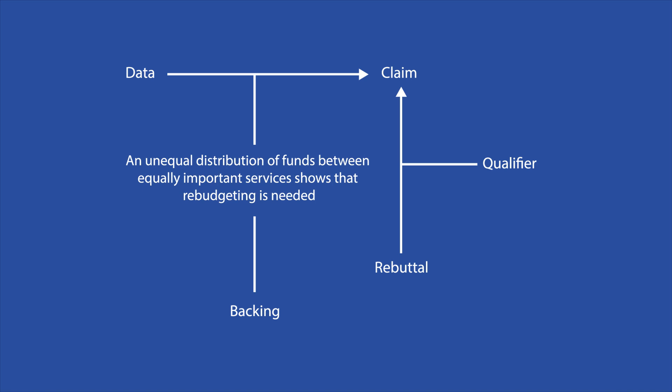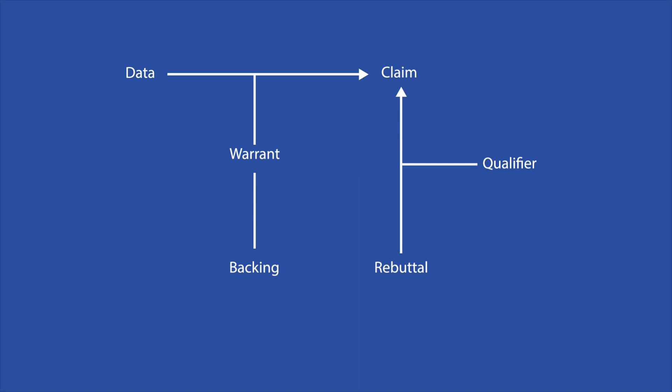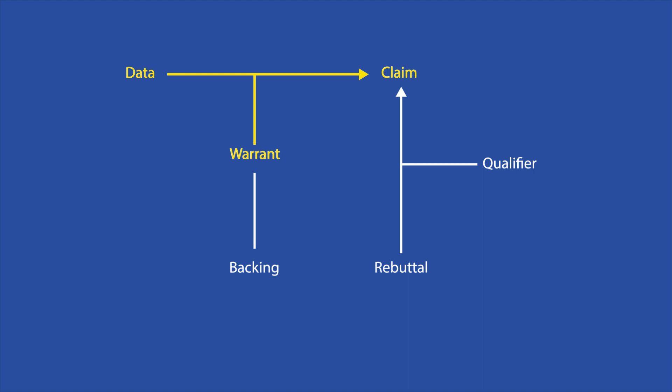The warrant for our example would be: "An unequal distribution of funds between equally important services shows that rebudgeting is needed." These three components — claims, data, and warrants — are fundamental to an argument. Omitting any one of them will result in an incomplete argument.